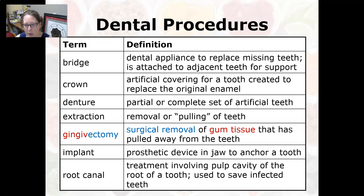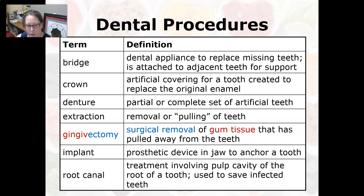A gingivectomy is the surgical removal of gum tissue that has pulled away from the teeth. An implant is a prosthetic device in the jaw to anchor a tooth. A root canal is a treatment involving the pulp cavity of the root of a tooth, used to save an infected tooth.